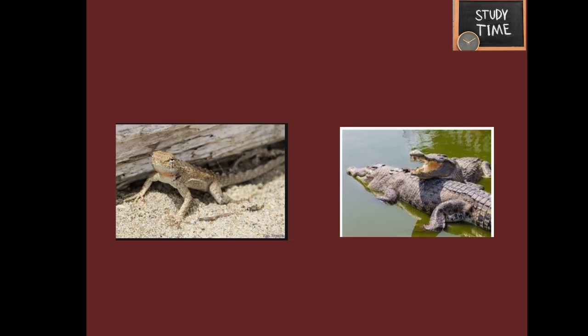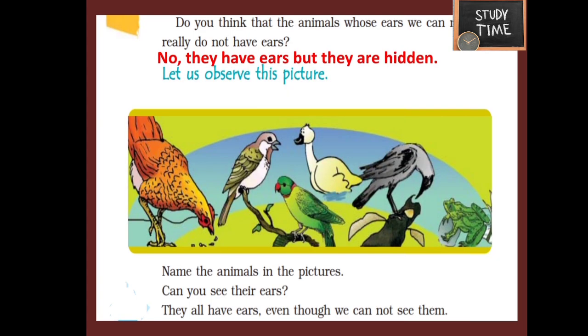Next, see the picture of a lizard. If you look carefully you will see tiny holes on a lizard's head — these are its ears. Next, see the picture of a crocodile. A crocodile also has ears like this but we cannot see them easily. Do you think that the animals whose ears we cannot see really do not have ears? No — they have ears, but they are hidden.